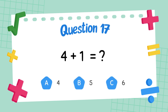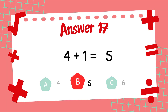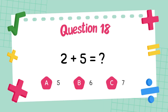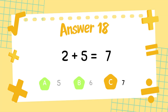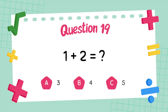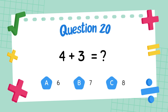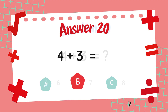What is 4 plus 1? The answer is 5. What is 2 plus 5? The answer is 7. What is 1 plus 2? The answer is 3. What is 4 plus 3? The answer is 7.